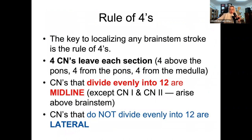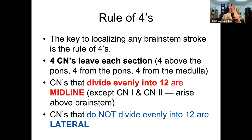The number one thing I wish I'd had in neuro was the rule of fours explained before we started the brainstem. I spent hours with a paid subscription learning the brainstem only to find out in fifth year that I could have figured it out in under five minutes. The rule of fours was created by a neurologist to help non-neurologists localize strokes more easily. Remember we have three sections — midbrain, pons, and medulla — and four cranial nerves leave each section.